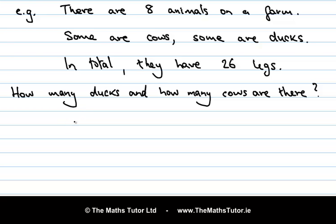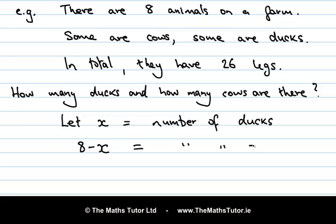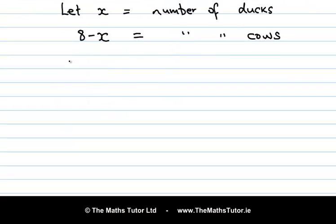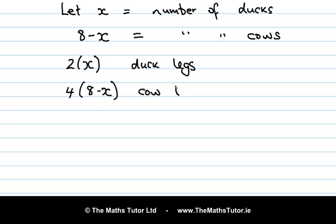The first thing is to name the variable. Let x be the number of ducks. Then 8 minus x is the number of cows, because we have 8 animals in total and taking away the number of ducks leaves the number of cows. Ducks have 2 legs, so in total there are 2 times x duck legs. Cows have 4 legs, so in total we have 4 times (8 minus x) cow legs. We are told there are 26 legs in total on the farm, so: 2x plus 4(8 minus x) equals 26.